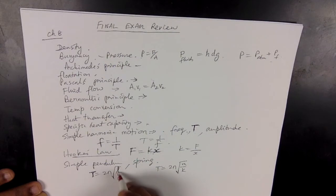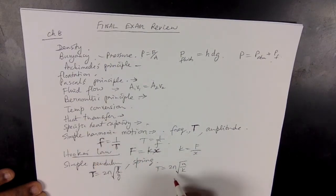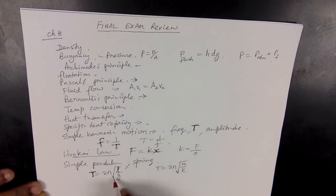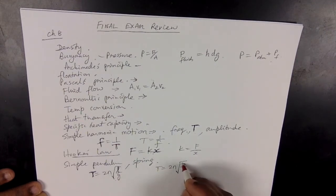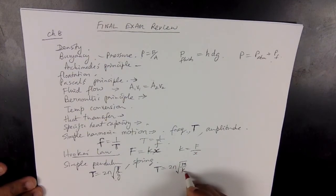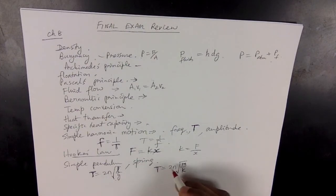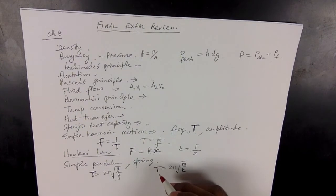Frequency stands for how many times the pendulum moves back and forth. If the mass of the vibrating object is bigger, the time period is going to be bigger, which means the frequency is going to be lower. Understand how each of these terms affects the others. That covers simple harmonic motion, simple pendulum, and spring pendulum. Then moving on from there to waves.